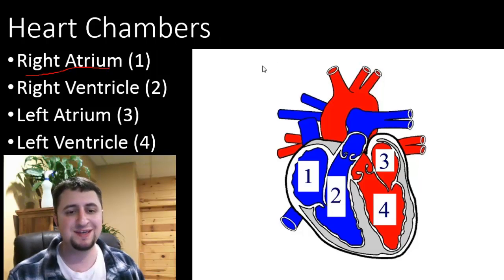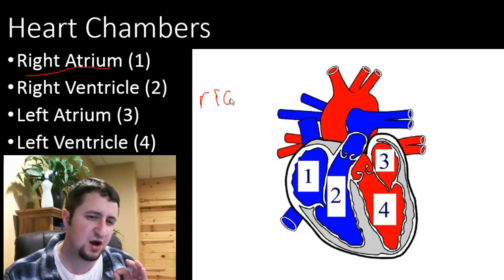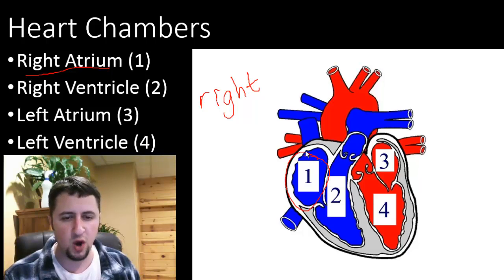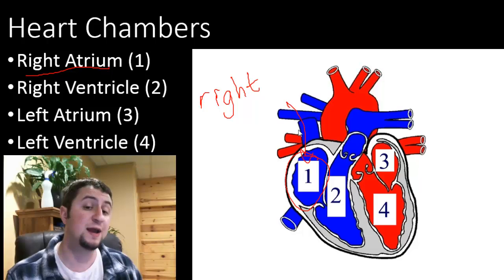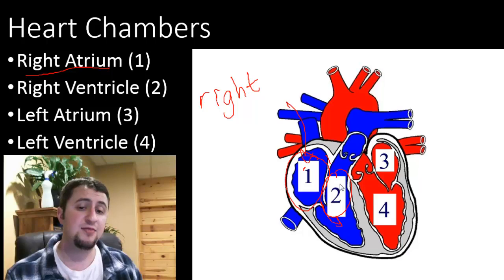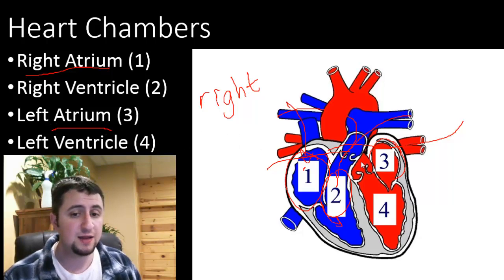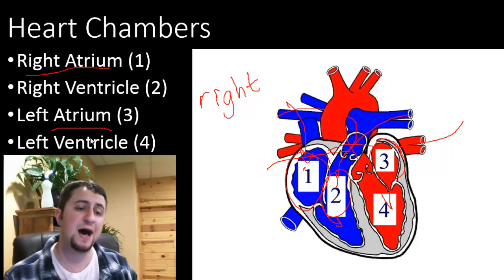The right atrium — once again, this is one of the most difficult things for people to understand — is on our left side of our diagram here. The right atrium is number one right here. Blood enters in through the right atrium. From there, it goes into the right ventricle, and then it goes out to the lungs, comes back into the left atrium, which is number three here. And then from the left atrium, it goes to the left ventricle and then out.